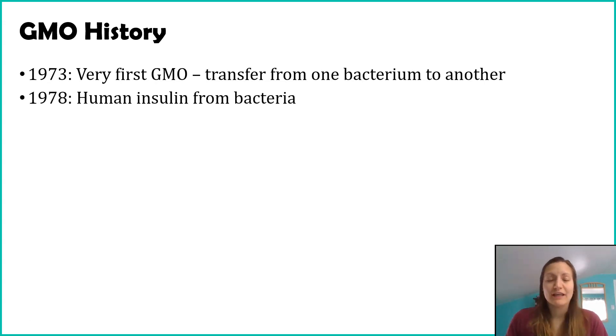When we start thinking about human uses of GMO technology, that wasn't too long after we figured out how to do this. About five years later in 1978, we were able to first derive human insulin from bacteria. This is an amazing technology that has really changed the world, particularly with folks with diabetes.